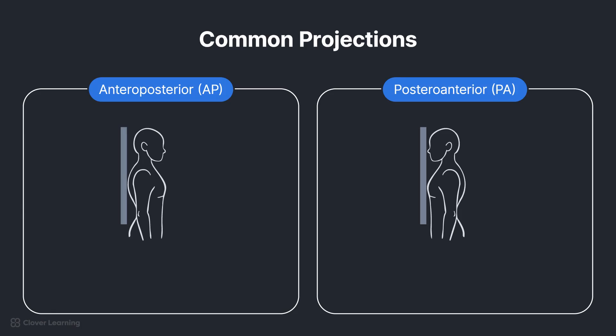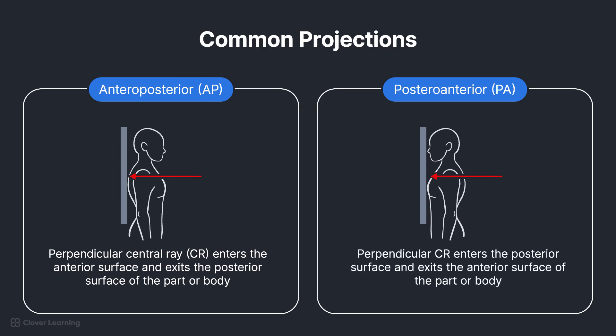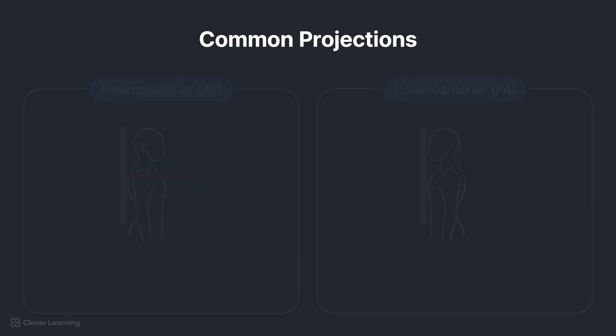AP: Perpendicular central ray or CR enters the anterior surface and exits the posterior surface of the part or body. PA: Perpendicular CR enters the posterior surface and exits the anterior surface of the part or body.